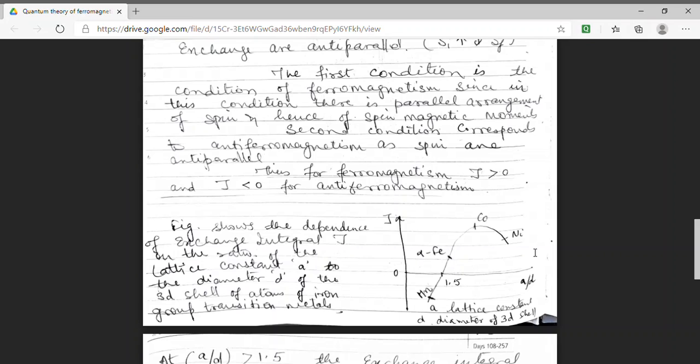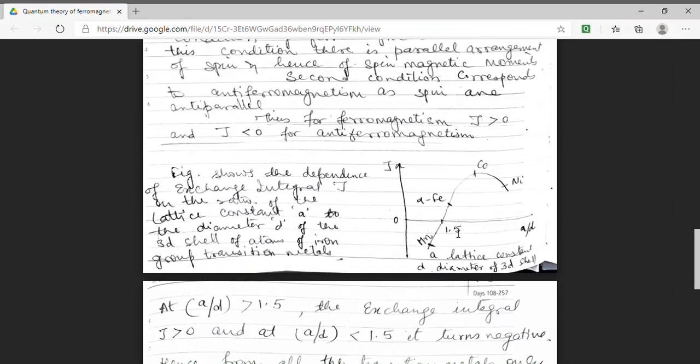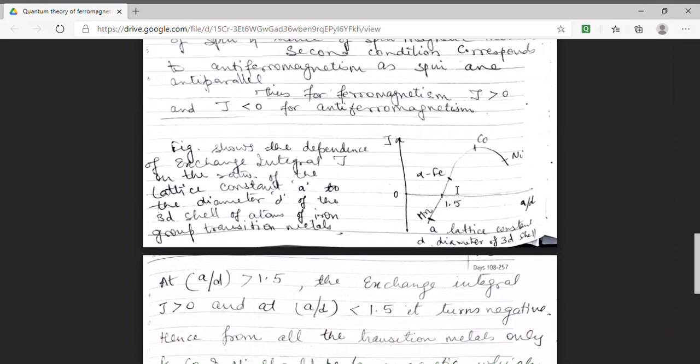We can see that if A by D is greater than 1.5, we have exchange integral J to be positive. And here we can see that for iron, cobalt, and nickel, A by D is greater than 1.5. Hence for these elements J must be positive. That means these elements should be ferromagnetic in nature. And this is also experimentally proved that these materials are ferromagnetic in nature.